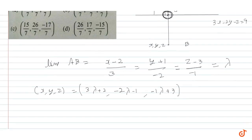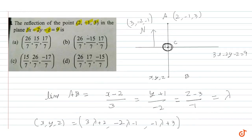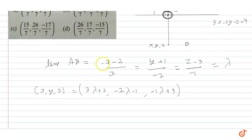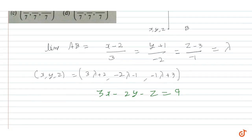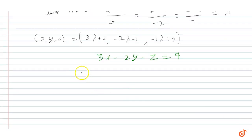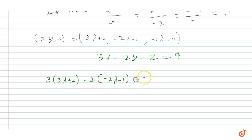To find intersection point C, substitute these coordinates into the plane equation 3x minus 2y minus z equals 9. So we compute: 3(3λ + 2) minus 2(-2λ - 1) minus (3 - λ) equals 9.